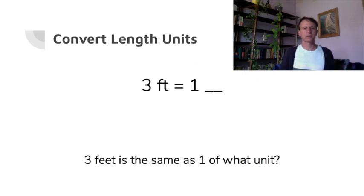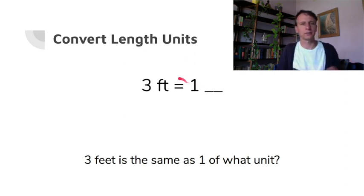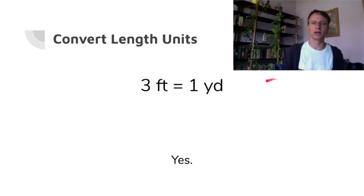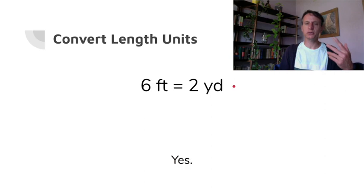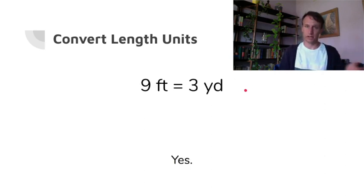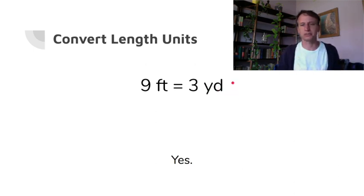Now we switch over to the customary system, and we're still doing length — feet, yards, and inches; we don't do miles in this one. Picture not the meter stick but the yard stick: three feet is one yard. Six feet is two yards, and nine feet is three yards. This is useful for football, golf, and buying cloth at the fabric store — it's all done in yards.